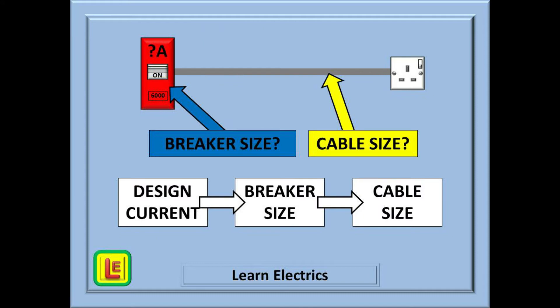This slide is more important than it might at first appear. When designing and installing a circuit we should always know the expected current demand of the connected devices. Once we know the expected demand — which we will call the design current — we can then choose a suitable breaker, either the same size as the demand or slightly above according to the standard sizes available. Only when we have decided on a breaker size do we select the appropriate cable size, which should always be equal to or greater than the breaker size.